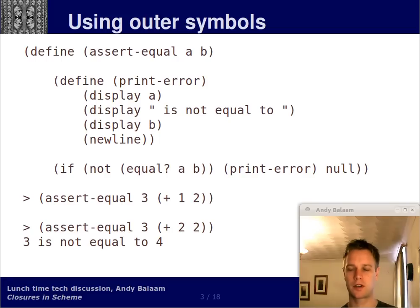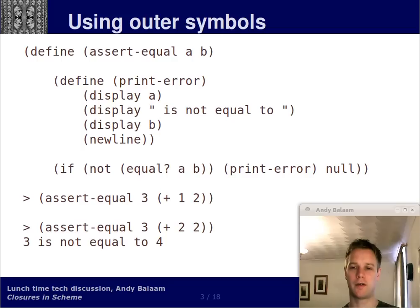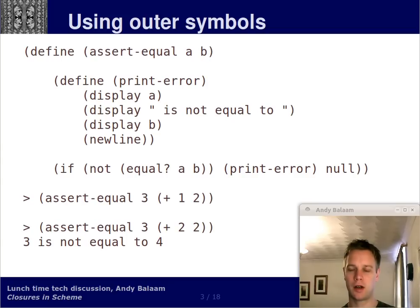Now let's define another function. This function is something we're going to use later, which may be slightly more complicated than we would have needed to explain this feature, but we're going to use it later so bear with me. We're going to define a function called assertEqual. That top line says define a function called assertEqual which takes two arguments, a and b. Skip past the rest of that function until you get down to the if line. What the function does is it performs an if and returns either null — you can see at the very end — or printError. If a and b are not equal, it returns the result of calling printError. If a and b are equal, it returns null.